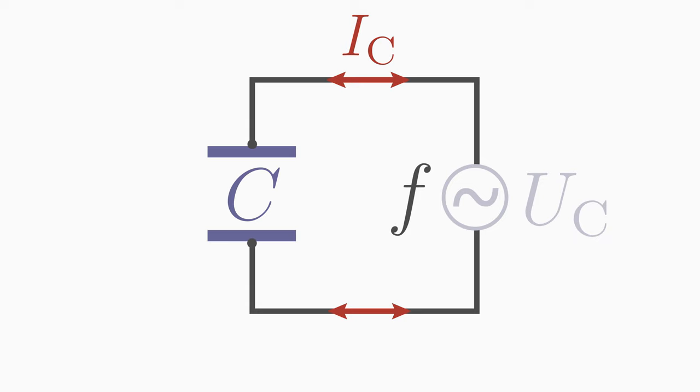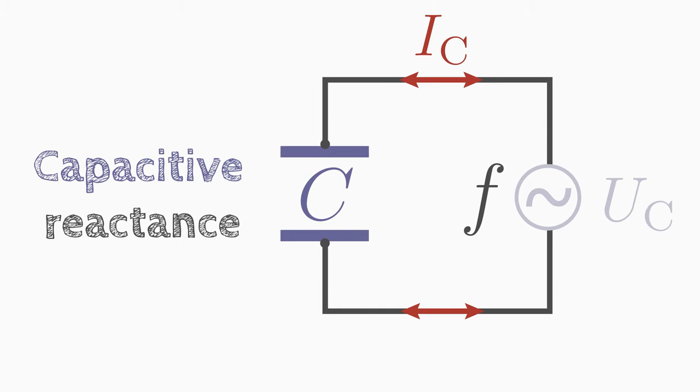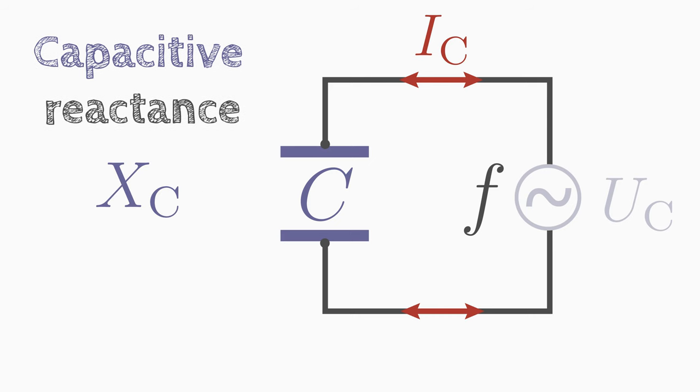A capacitor to which an alternating voltage is applied has a complex non-ohmic resistance which is called capacitive reactance. This resistance is usually abbreviated with the letter X with a small c. C stands for capacitor.